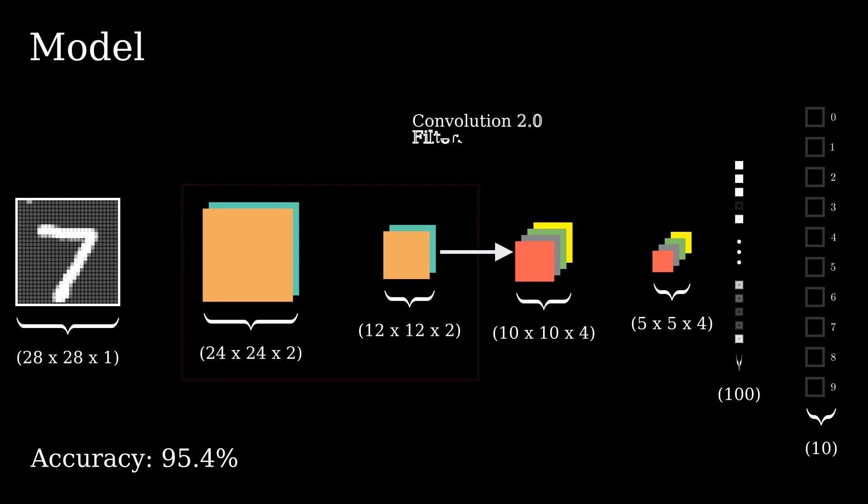Then, we move on by performing our second convolution. This time, we'll use 4 filters that have the dimensions 3x3x2. The activation is sigmoid.